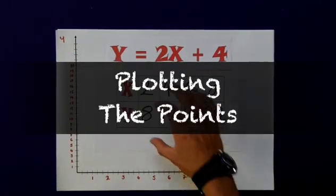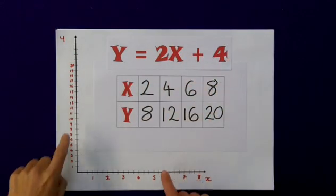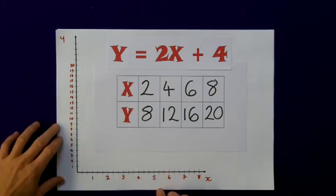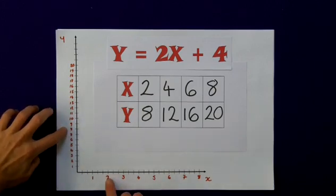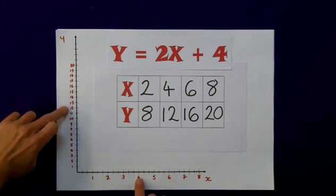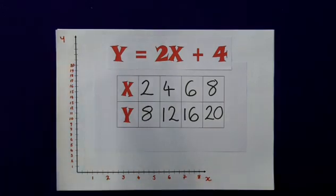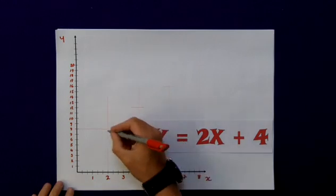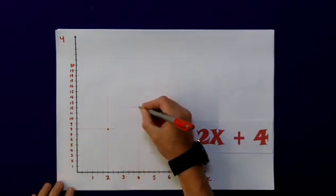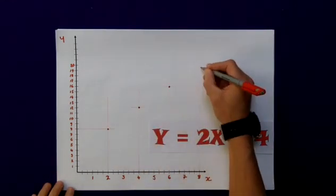So now I have my pairs of values and my axes, I can plot each of these in turn: 2 and 8, 4 and 12, 6 and 16, and 8 and 20. So my points are here, here, here, and here.